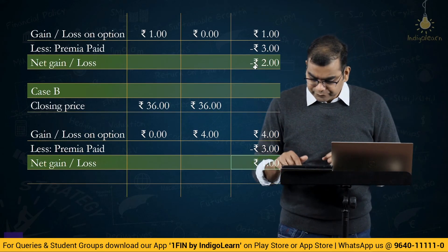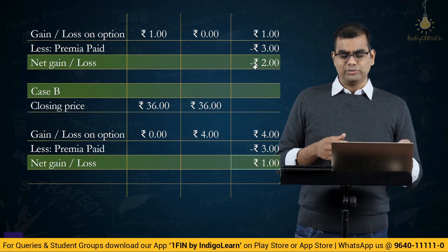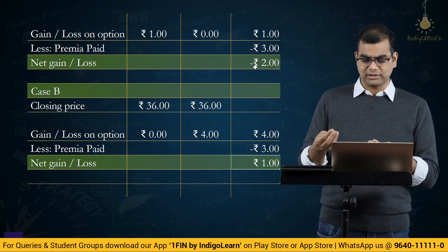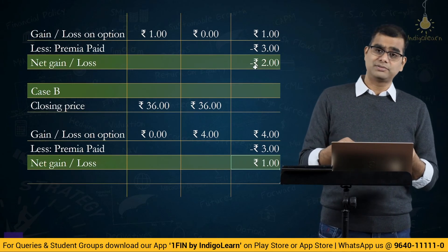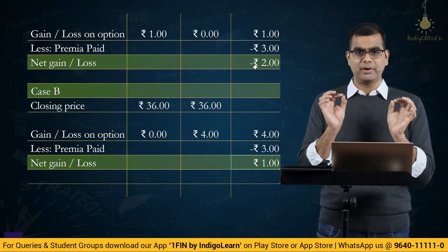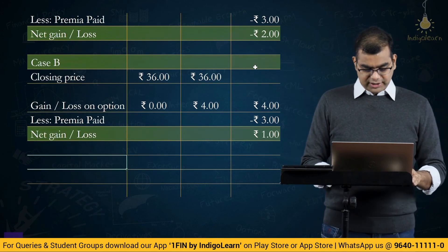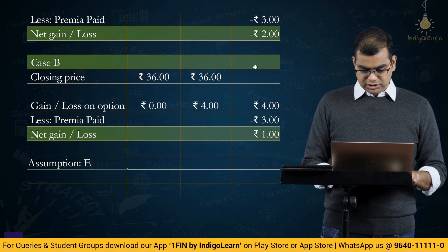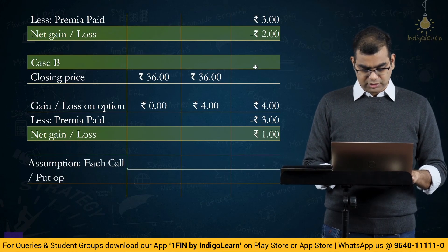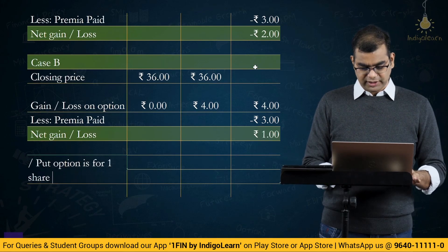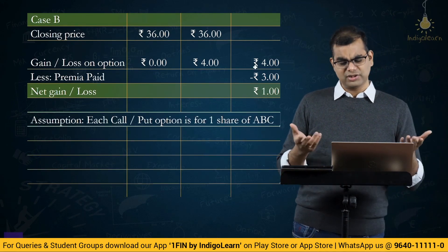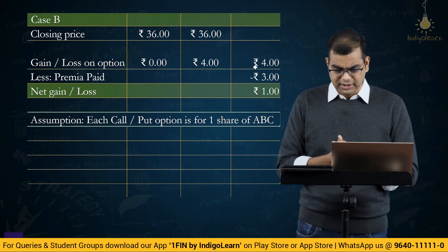If each option is for some number of shares, you multiply accordingly — for example, by 100 if each option covers 100 shares, or by whatever the lot size is. Since no lot size is given, we assume each call and put option is for 1 share of ABC Limited. You can write this as an assumption. That ends this question.